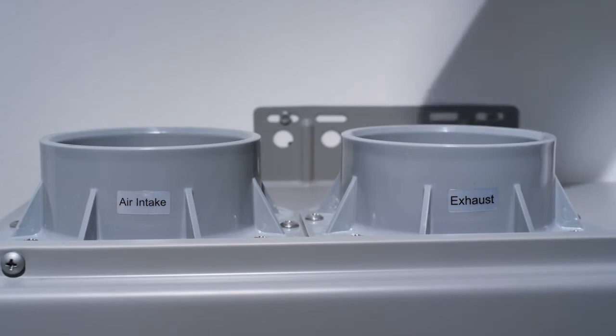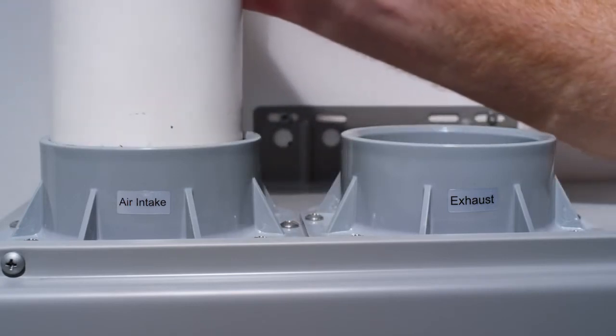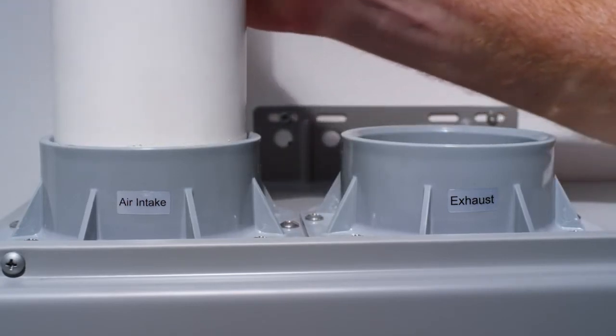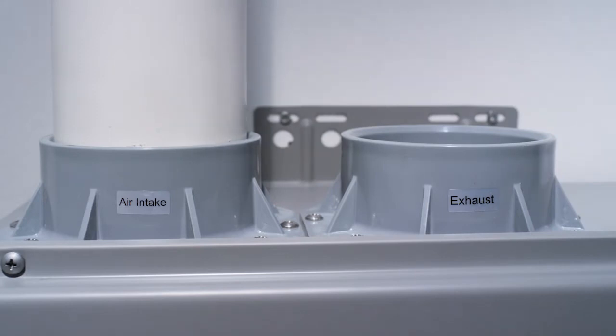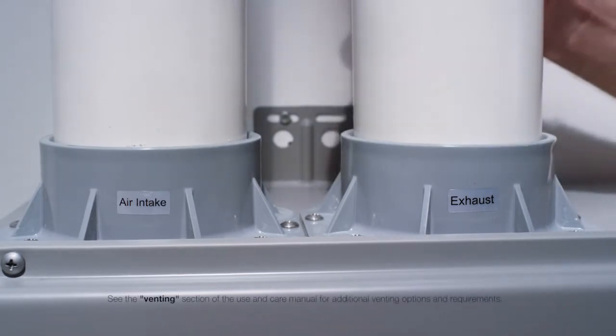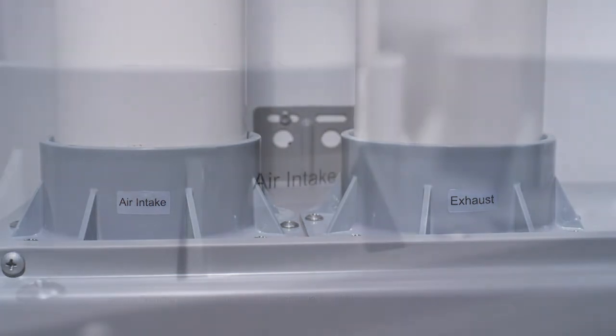Both the exhaust and air intake vents must be run outside. Measure, cut, and dry fit the venting together before gluing the fittings. Start at the water heater with the exhaust and work your way to the termination going outdoors. Complete the air intake as well.